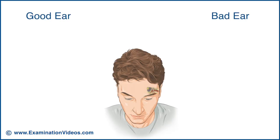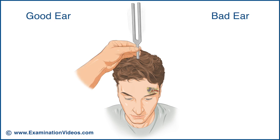To explain the Weber test, an example of a patient with a hearing loss in the left ear will be used. Strike a 512 Hz tuning fork and place it on the vertex of the skull. Ask the patient in which ear the sound is heard loudest.